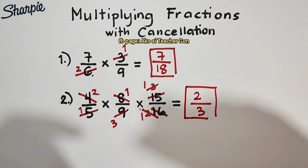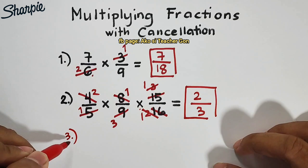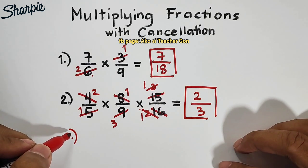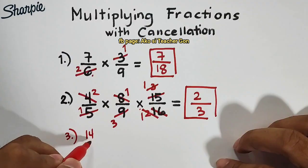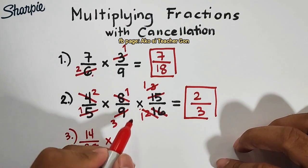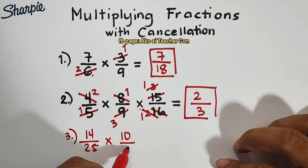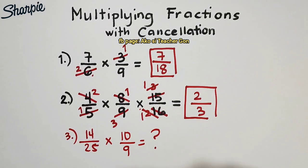I hope that you learned from our video. And for your assignment, this will be your assignment, which you need to answer in our comment section. I will allow you to answer this. We have 14 over 25 times 10 over 9. What do you think is the answer here? You can multiply these fractions with cancellation method.